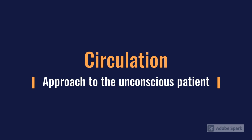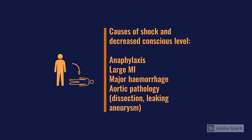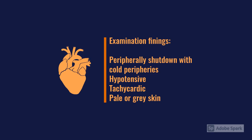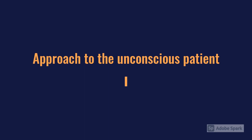Moving on to C — circulation. From the unconscious patient's point of view, we're particularly interested in shock. If somebody has a low level of responsiveness, we're not talking about mild hypotension — these are highly shocked patients. Think: is this anaphylaxis, a large STEMI, are they bleeding out, is it an aortic dissection or aneurysm, or major trauma? These patients will be highly peripherally shut down, very hypotensive, and tachycardic. I saw a patient whose colour was a horrible grey-purple, highly clammy — a very striking sign of how unwell they are. We consider fluid boluses plus or minus blood products, and again it's about escalation.